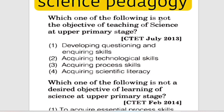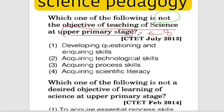Which one of the following is NOT an objective of teaching science? In the upper primary stage — class 6 to 8 — the objectives include developing questioning and enquiry skills.